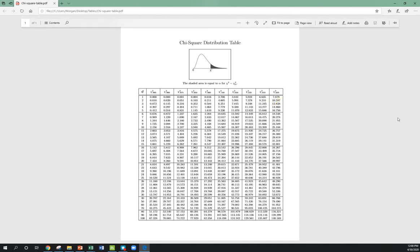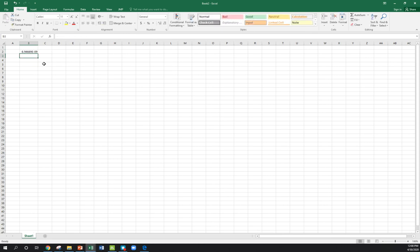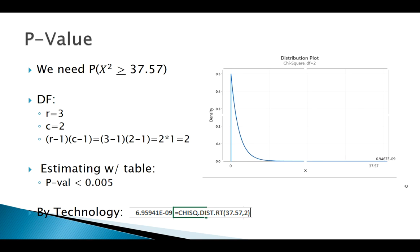I can check this in Excel again using my chi-squared dist right tail, 37.57, degrees of freedom two, and there we go. That's giving me a really, really small number. So estimating it, finding with Excel, or you could also graph it, our p-value is going to be really small either way.